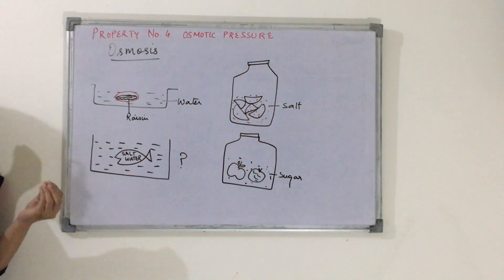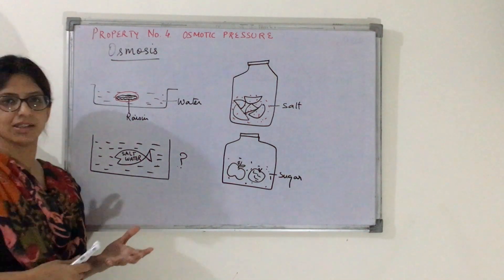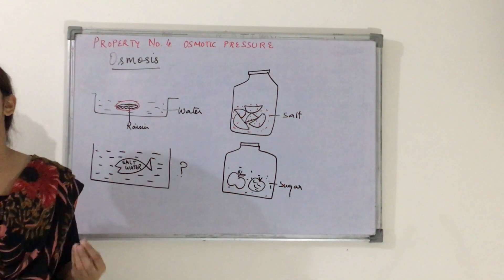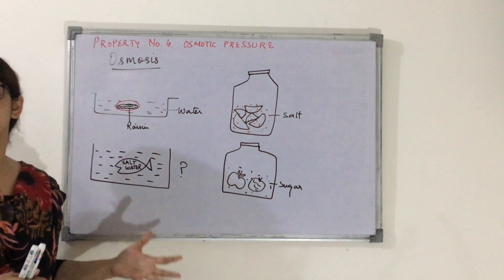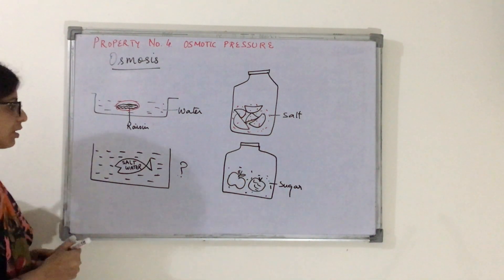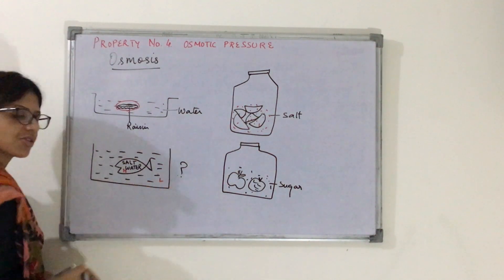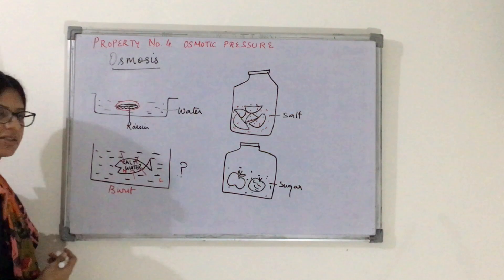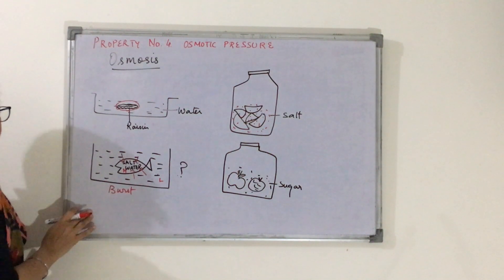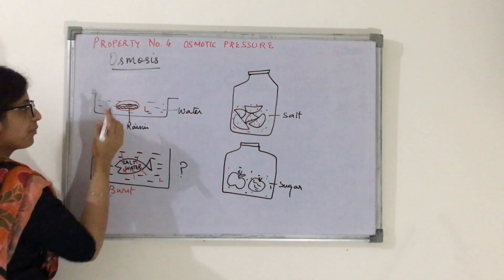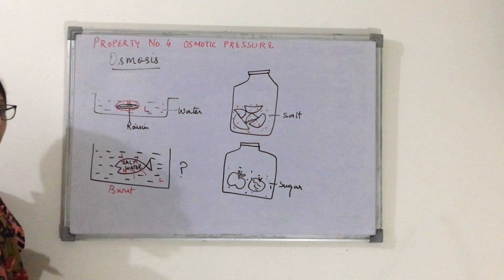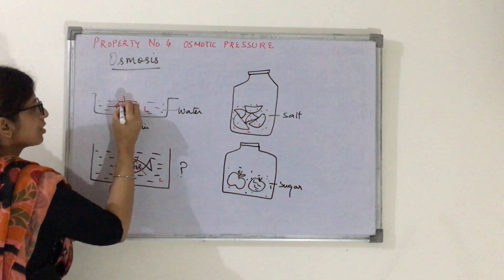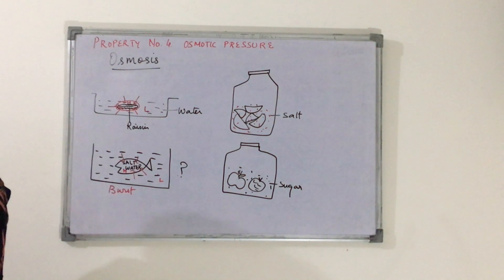In the first case, when the raisin was put in plain water, it became full — it swelled up. In the second case, a fish that lives in salty water was placed in fresh water. Here the fish had high concentration inside and the surrounding water had low concentration, so water moved from low concentration to high concentration, and the fish burst. So in both cases, water movement occurred from low concentration to high concentration — that is osmosis.